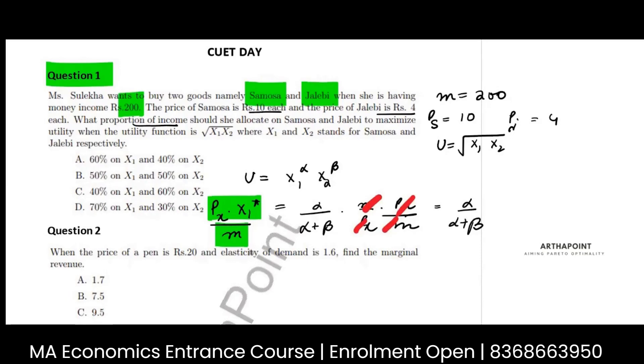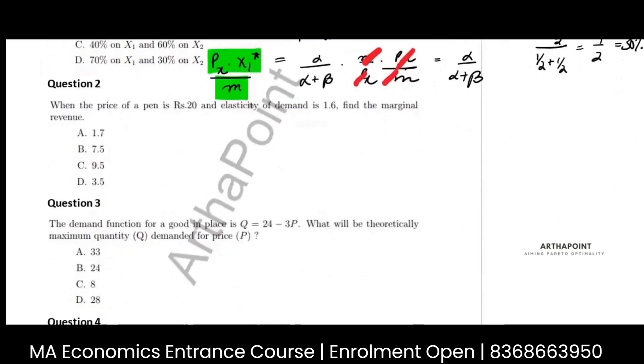So this is the trick you just have to remember: whenever it asks you about proportion of income that is spent on the good, you just find alpha upon alpha plus beta. So in this case, this is x1 to the power half, x2 to the power half. So your proportion of income that you allocate on first commodity will be alpha upon alpha plus beta, which will be half, so which is 50 percent. So the answer is B. Just look at alphas and betas, don't start forming the entire Lagrange. It is not going to be useful here. Okay, let's go to the next question.